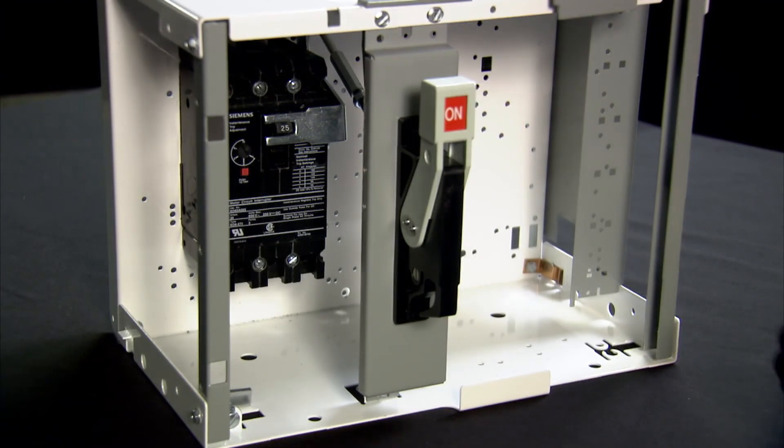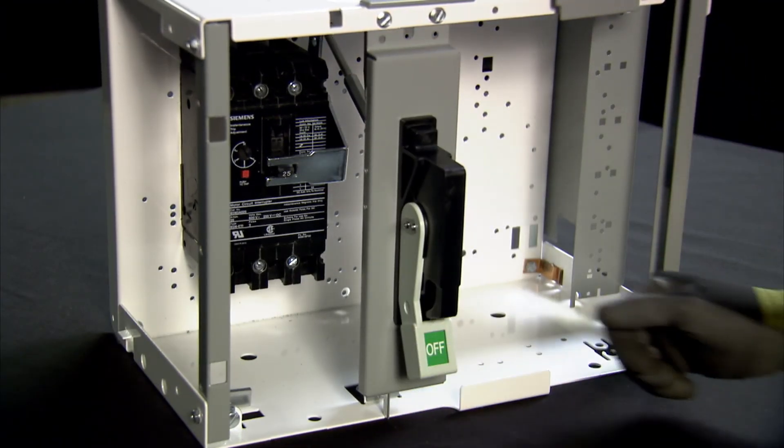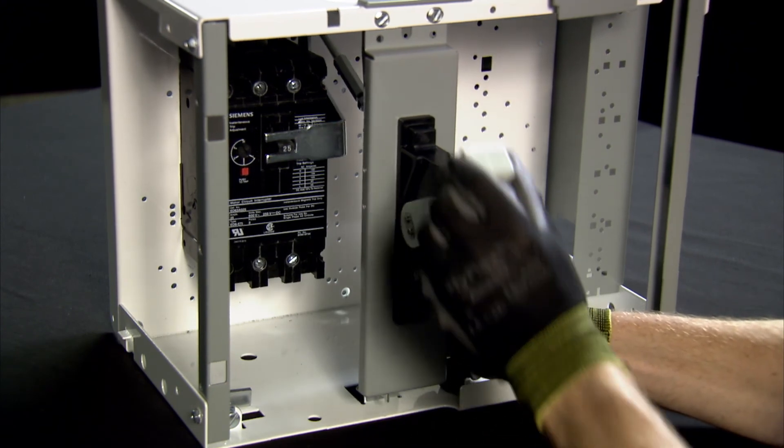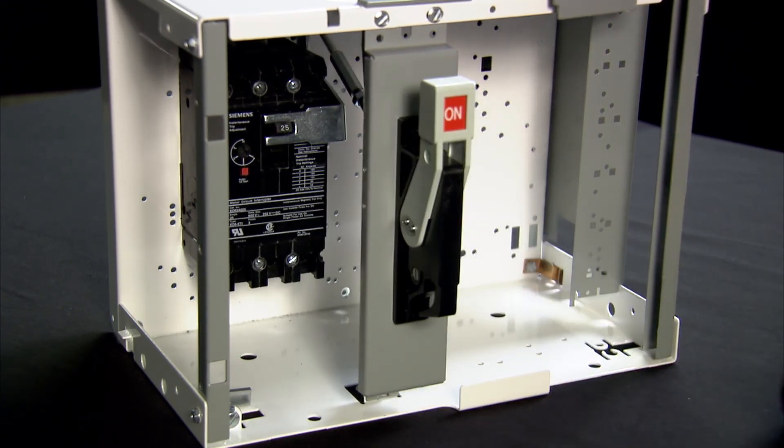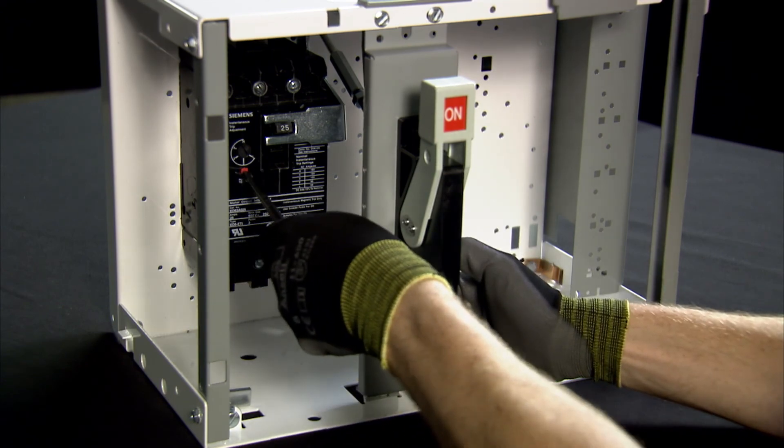This is how a properly functioning handle should behave. The handle door interlock lever must be held down while testing the trip function of the breaker. If the lever is not held down, the handle will not fall into the trip position properly.